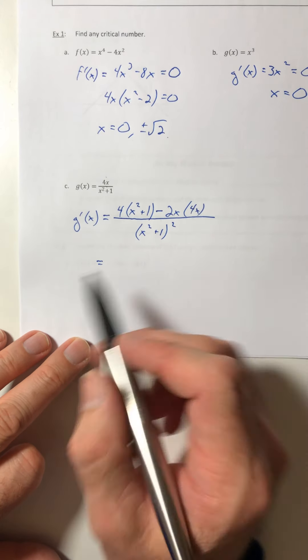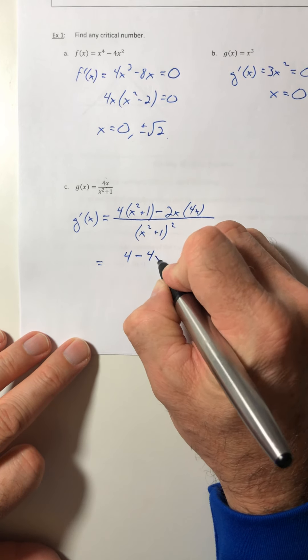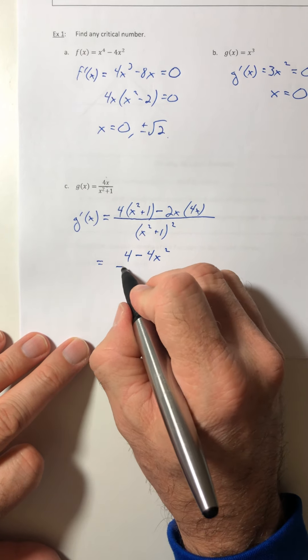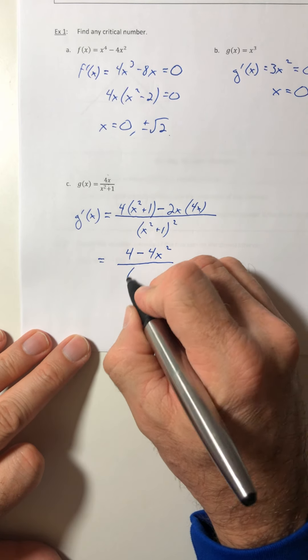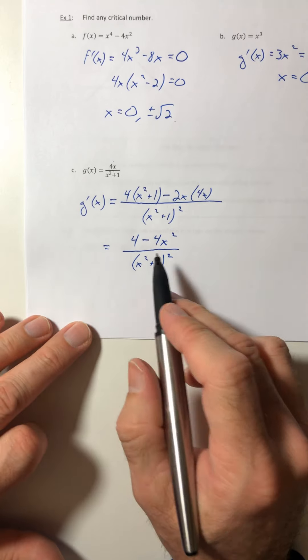So if you multiplied it, combined like terms, we end up with 4 minus 4x² over (x²+1)². And the denominator stays the same.